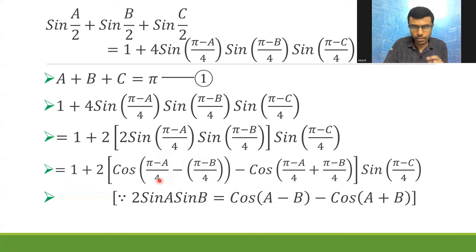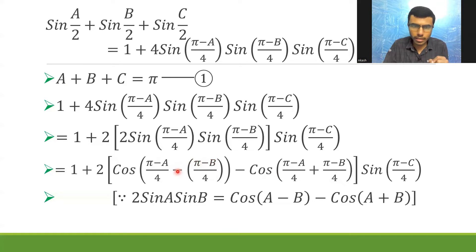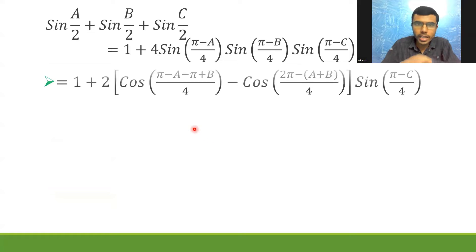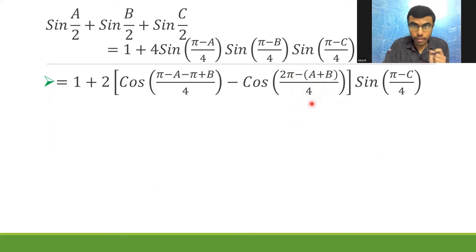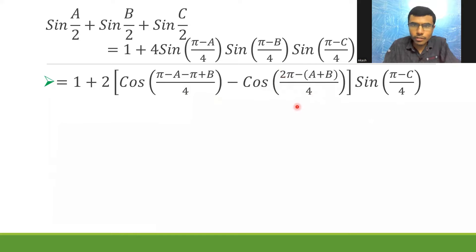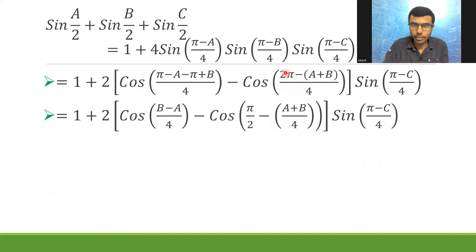If we multiply through, observe the denominators are the same, so we can perform operations on the numerators. The minus would get multiplied in, giving minus π plus b. So this would be nothing but (a−b)/4 in the first term, and 2π minus (a+b) divided by 4 in the second. π and minus π cancel, leaving cos((b−a)/4). Then splitting the denominator: 2π/4 is π/2, so I have cos(π/2 − (a+b)/4).